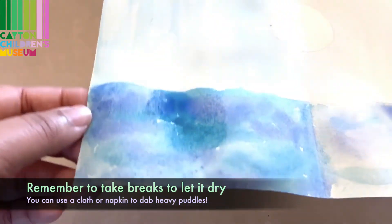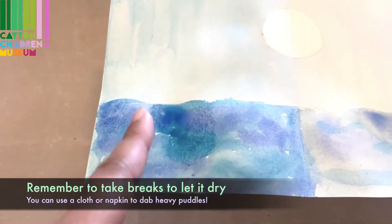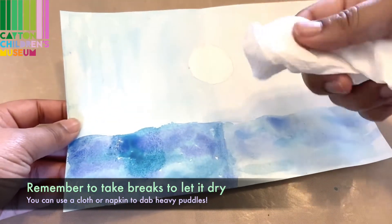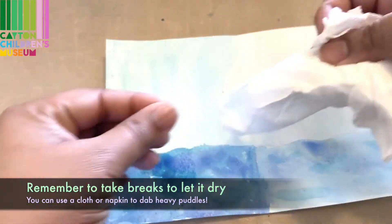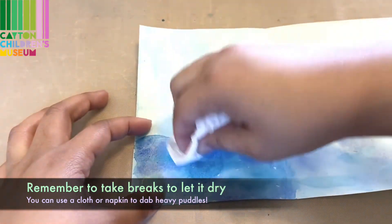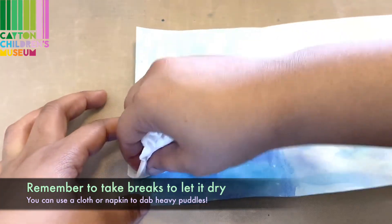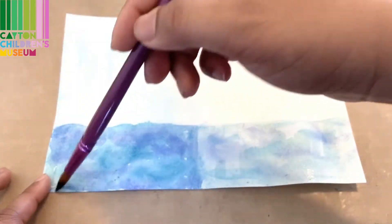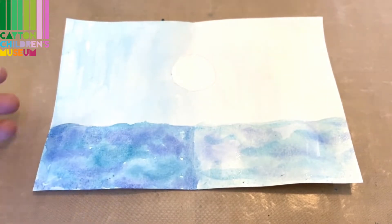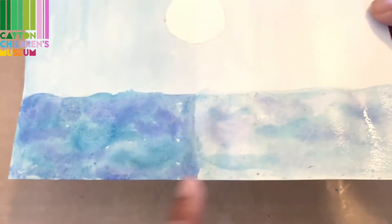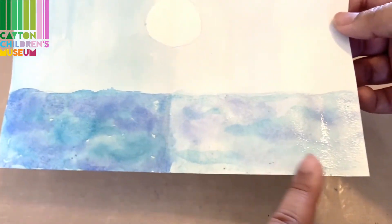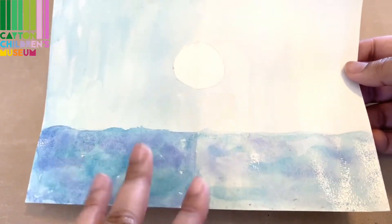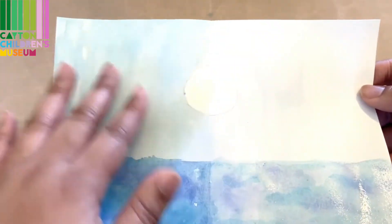If you've gotten too much paint in one area or too much water and it's really wet, you can use an old tissue or paper towel to dab that part. So I'm going to let this part dry a little bit. I'm going to add more layers on top. But while this dries, I'm going to go ahead and start working on the sky area.